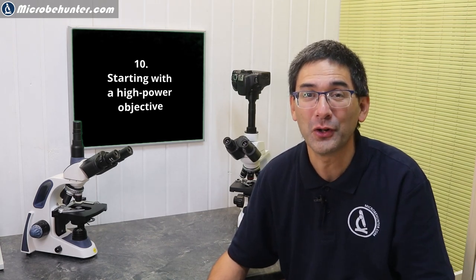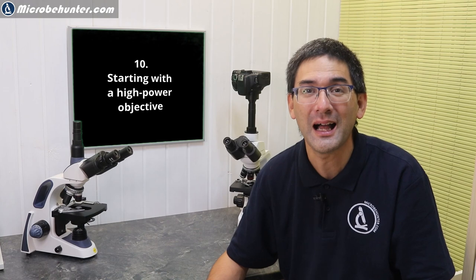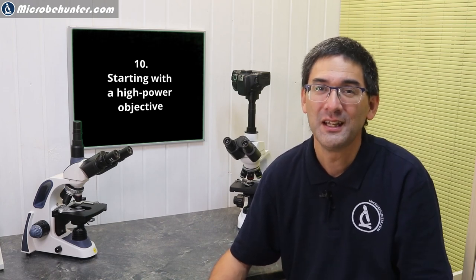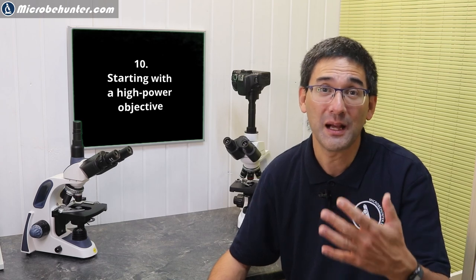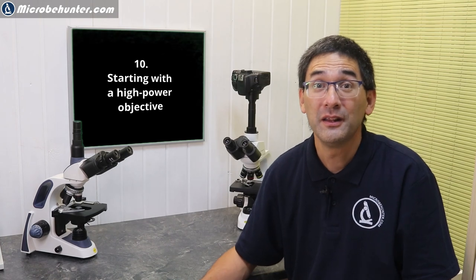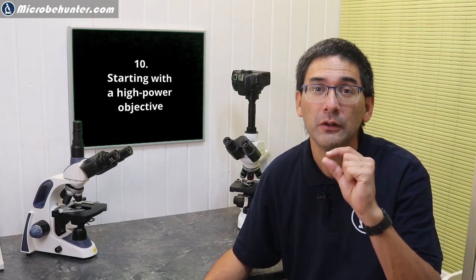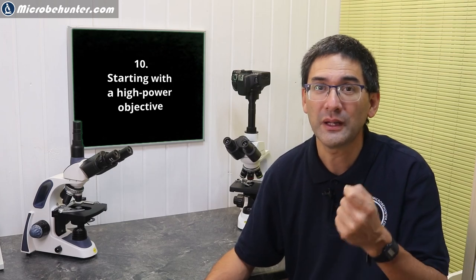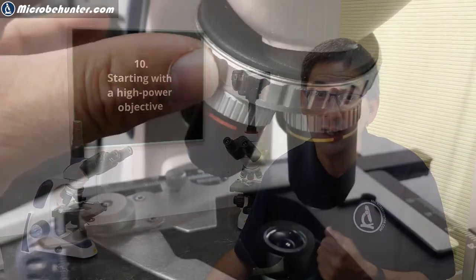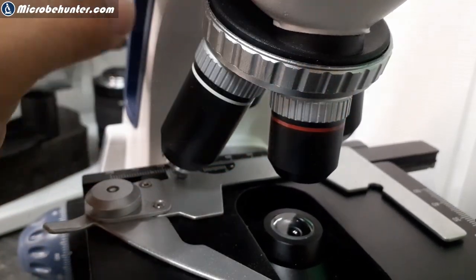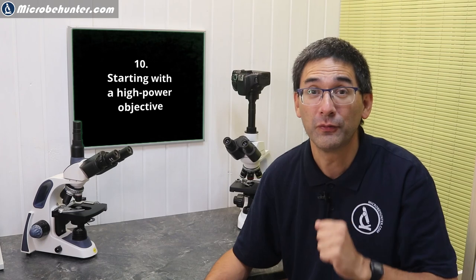Some people like to start microscopy using the high power objective. This is bad for several reasons. High power objectives like 10x, 40x, and even 100x oil have very low depth of field, making it very difficult to get the specimen in focus. What you have to do is always start with a 4x objective.